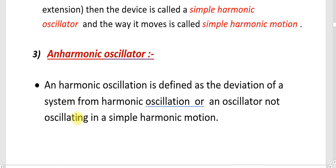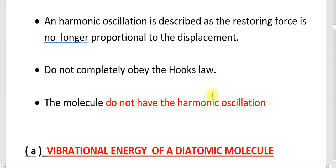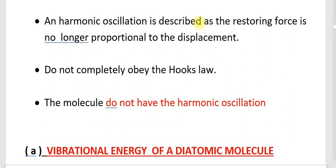If a device does not follow Hooke's law (F = -kx), then we can say it is an anharmonic oscillator. An anharmonic oscillator is defined as a deviation of a system from harmonic oscillation — that is, an oscillator not oscillating in simple harmonic motion.